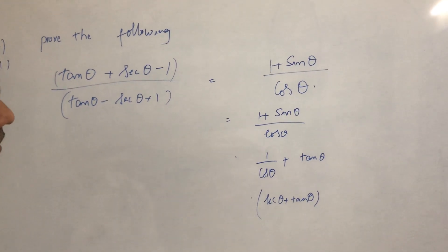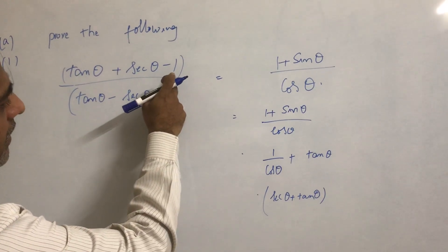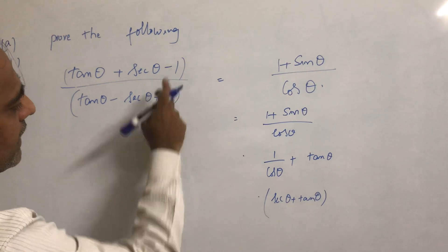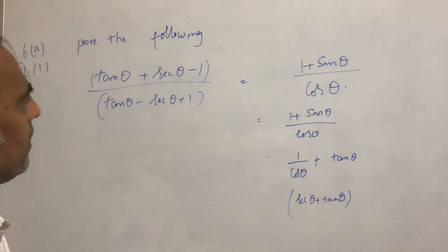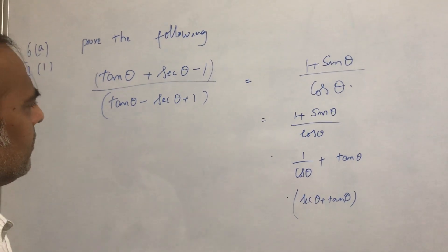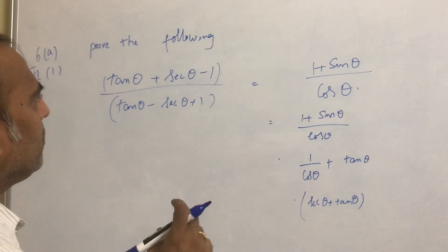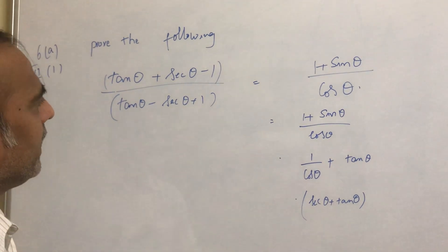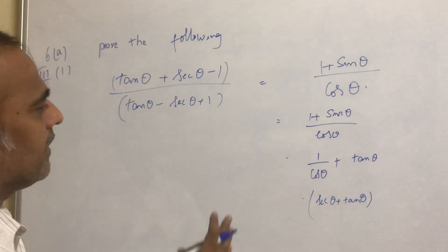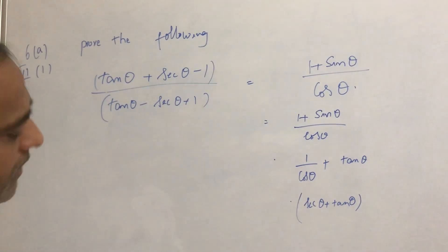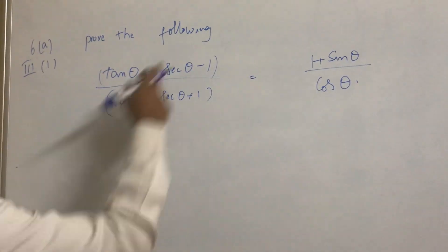The RHS is sec θ + tan θ. We know that sec²θ − tan²θ = 1. So by looking at this, we know we need to expand 1 as sec²θ − tan²θ. To solve these types of problems, instead of jumping straight in, we need to do some thought process first. If we have two or three ways, we need to select the best possible way.